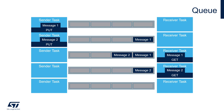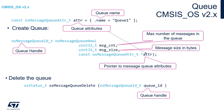Here we can see a typical use case of the queue. In this example we have a queue with a length of four elements, a sender task, and a receiver task. The sender sends message one, then message two, into the queue. Since it is FIFO, message one is read first by the receiver task. After message one is consumed, message two becomes the first item to be read, followed by an empty queue with no activity on either task.